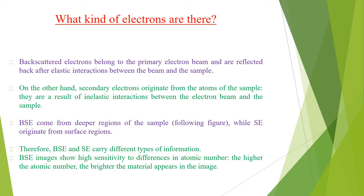We will now see what kinds of electrons are produced. The interaction of electrons with the sample can result in generation of many different types of electrons, photons, or irradiations. In the case of scanning electron microscopy, the two types of electrons used for imaging are the backscattered electrons (BSE) and the secondary electrons. The backscattered electrons belong to the primary electron beam and are reflected back after elastic interaction between the beam and the sample. Secondary electrons originate from atoms of the sample as a result of inelastic interaction between the electron beam and the sample.